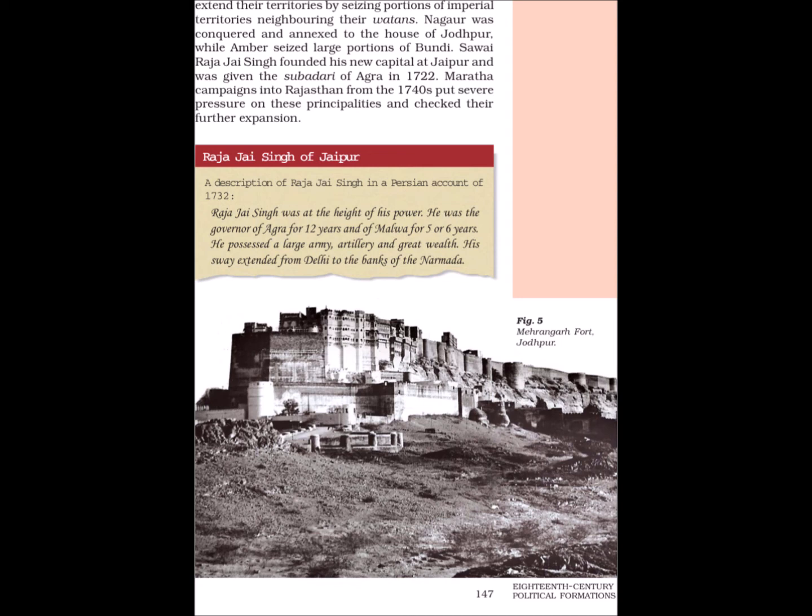Raja Jaya Singh of Jaipur. A description from a Persian account of 1732: Raja Jaya Singh was at the height of his power. He was the governor of Agra for 12 years and of Malwa for 5 or 6 years. He possessed a large army, artillery and great wealth. His sway extended from Delhi to the banks of the Narmada.